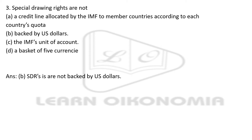Special Drawing Rights — which of the following is NOT true? Options are: a credit line allocated by the IMF to member countries according to each country's quota; backed by US dollars; the IMF unit of account; a basket of 5 currencies. You have to be very clear with respect to the word 'not' here. The right answer is option B — SDRs are not backed by US dollars alone.